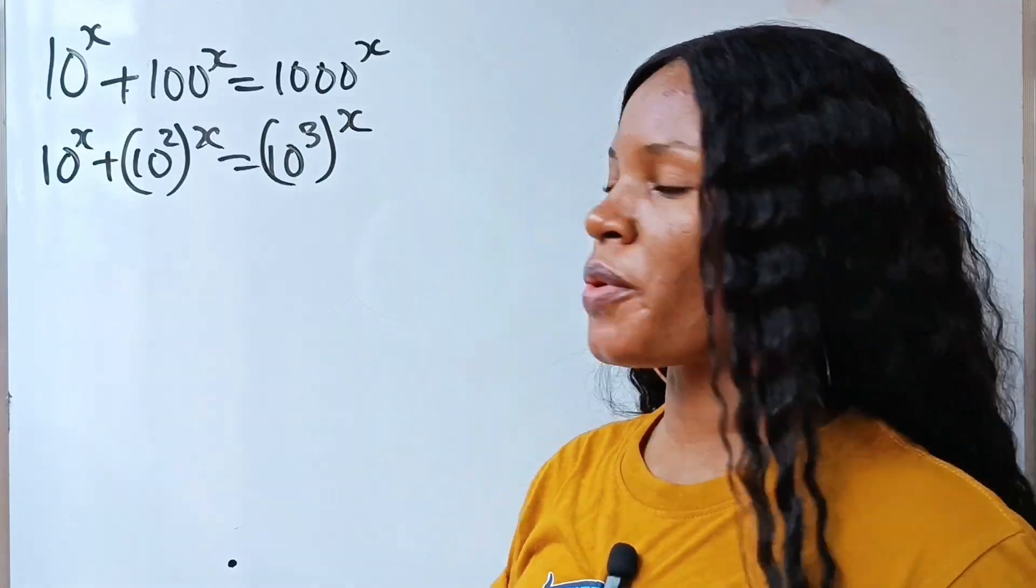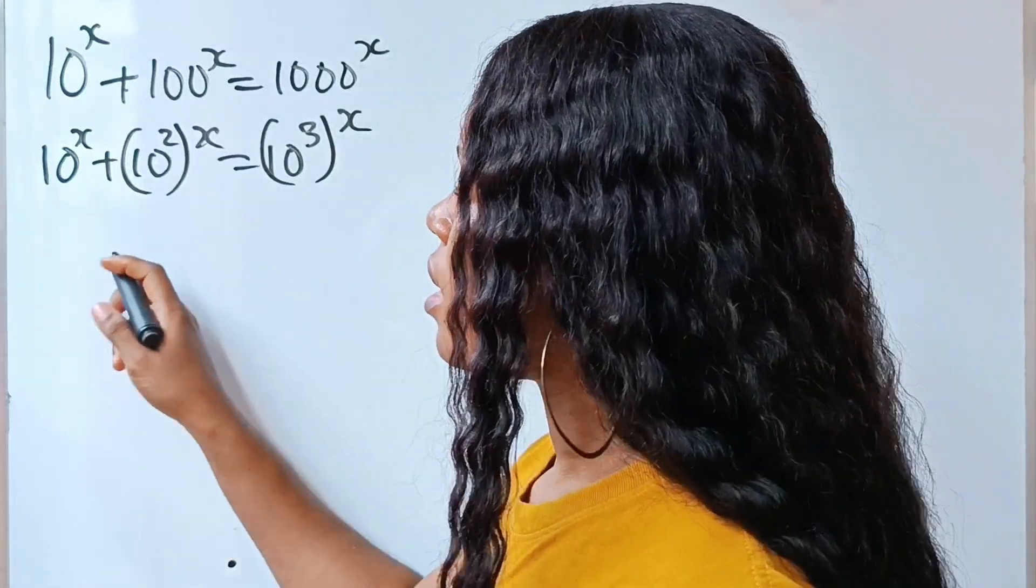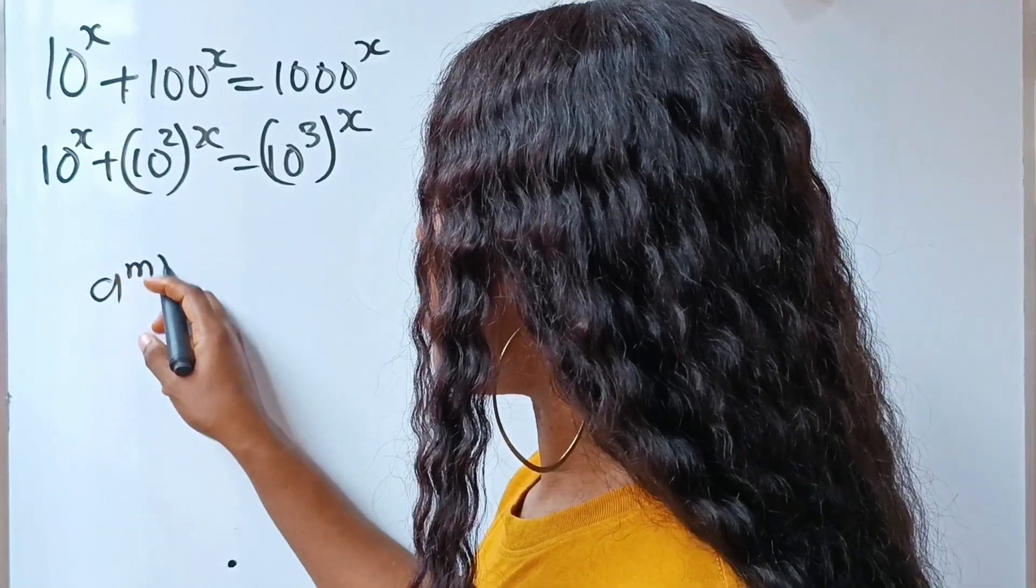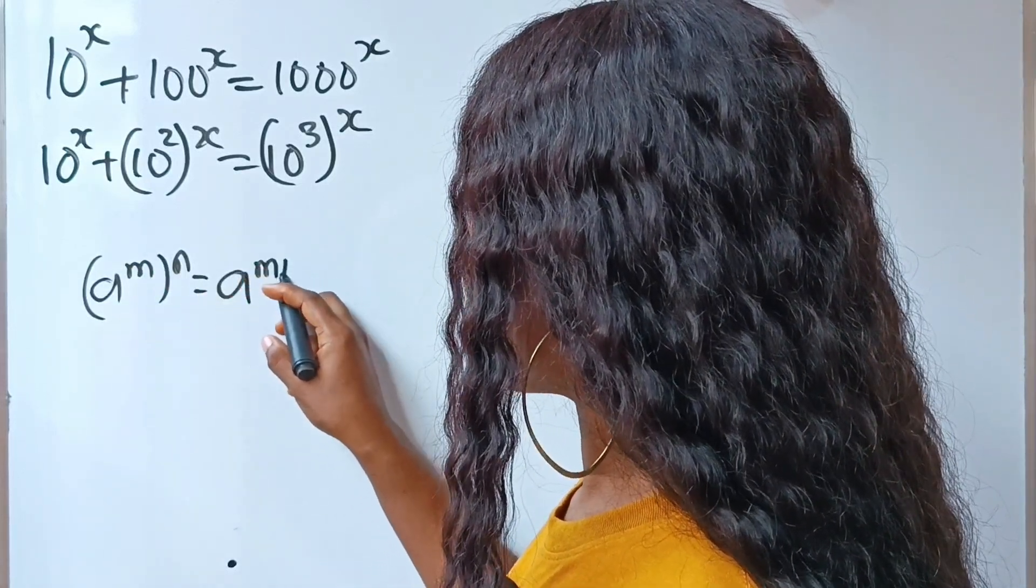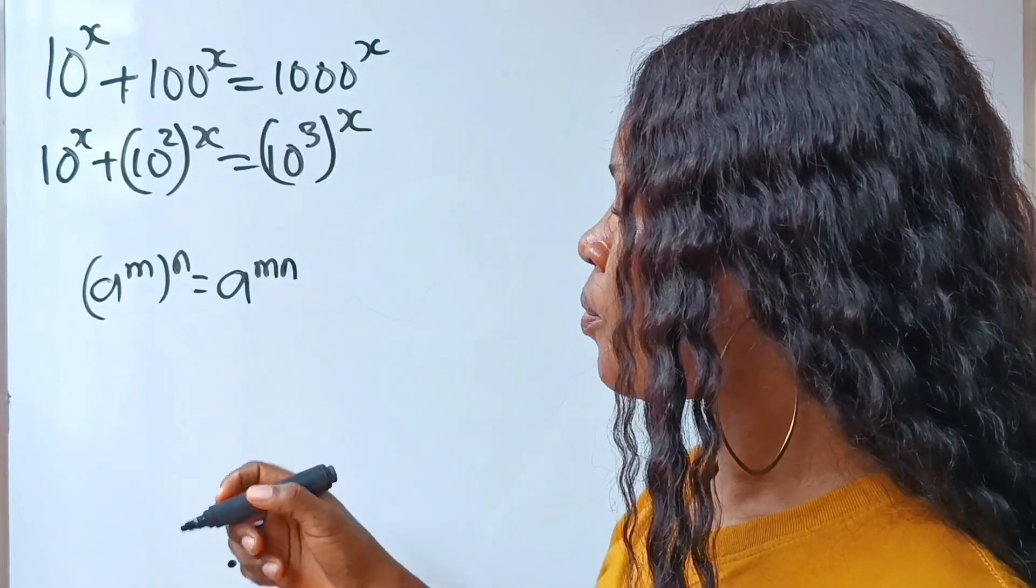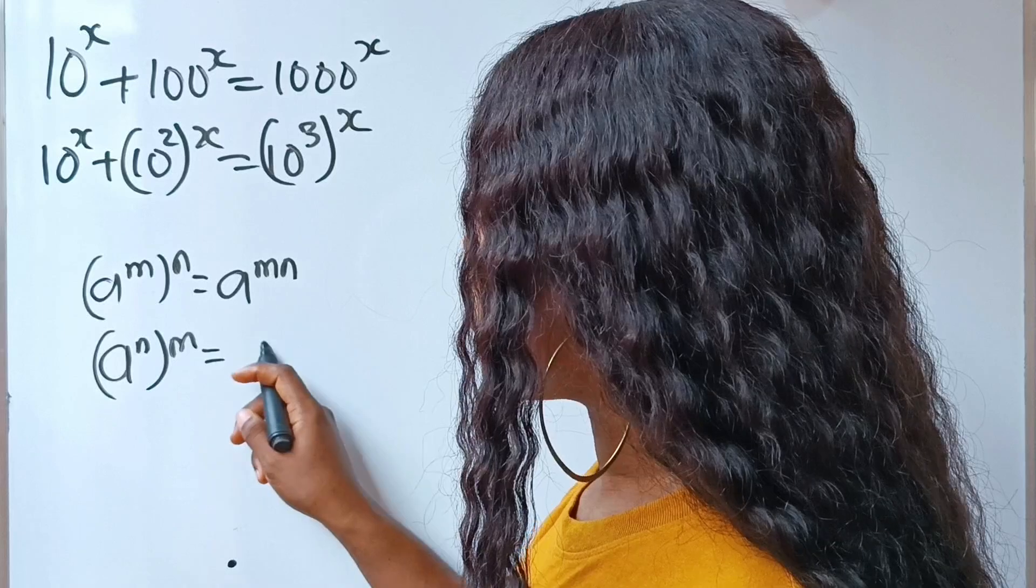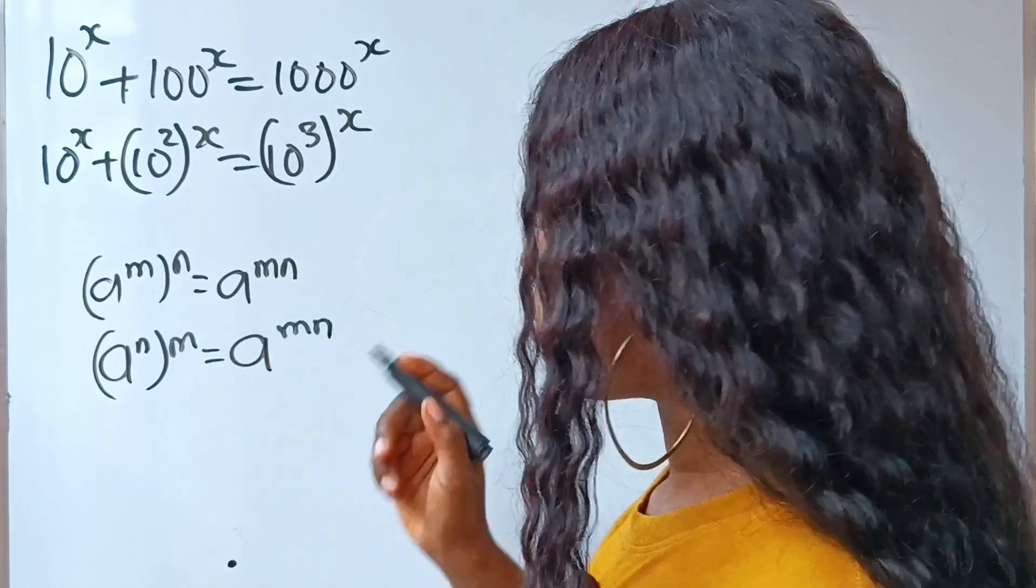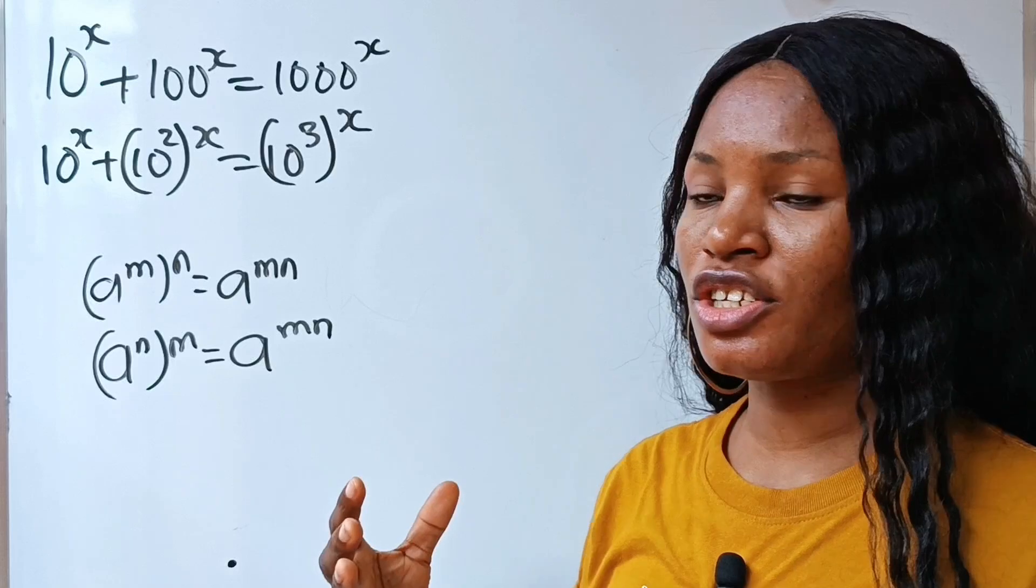Now I want us to recall the law of exponents or indices that states that a raised to the power of m raised to the power of n is equal to a to the power of mn. That is m times n. So that simply means that we can write a to the power of n raised to the power of m and we are still going to get the same thing. So that means that the position of the powers can be interchanged.